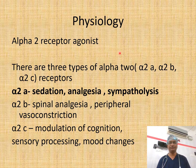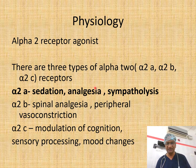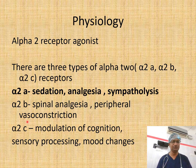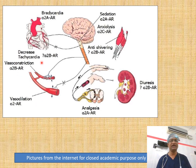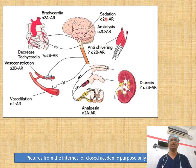It is an alpha-2 receptor agonist. There are three types of alpha-2 receptors: A, B, and C. Alpha-2A is concerned with sedation, analgesia, and sympatholysis. Alpha-2B is about spinal analgesia and some peripheral vasoconstriction. Alpha-2C is about mood changes. Alpha-2A is also involved in bradycardia, and alpha-2B may be involved in anti-shivering and diuresis. So we are primarily concerned with alpha-2A — sedation, anxiolysis, bradycardia, and analgesia. Alpha-2B may be clinically useful as an anti-shivering agent.